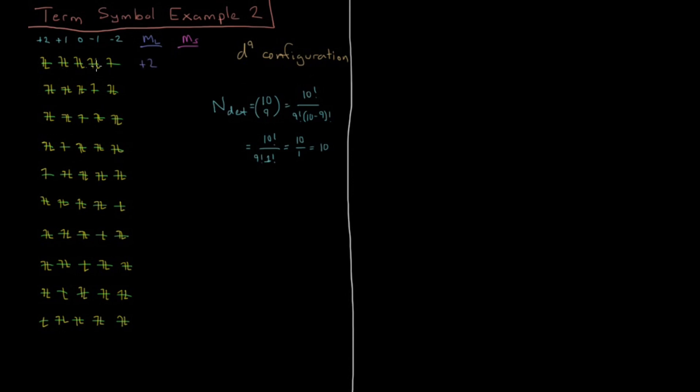In each case we add up the values for all 10 electrons. For the first one, M_L is plus 2 - the only unpaired has plus 2 with no corresponding minus 2, all others cancel out. One electron alone there gives plus 1, then going down the line we get 0, minus 1, minus 2.